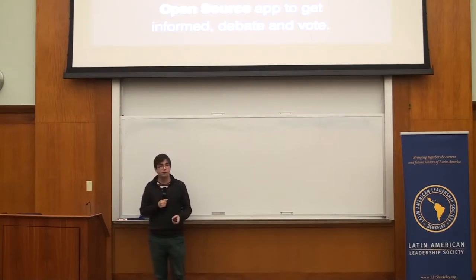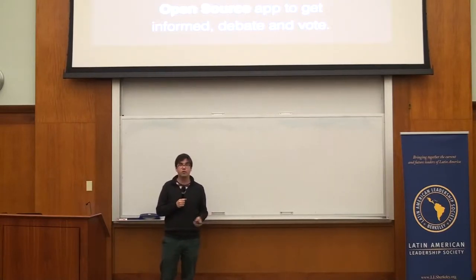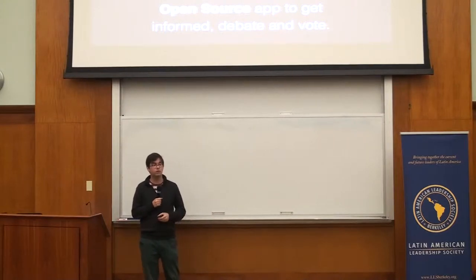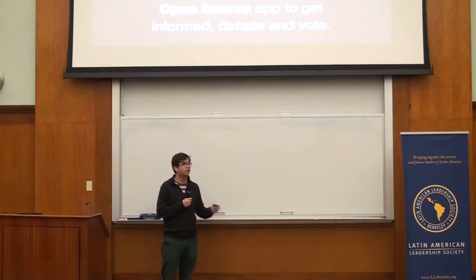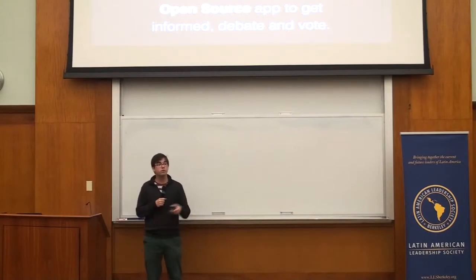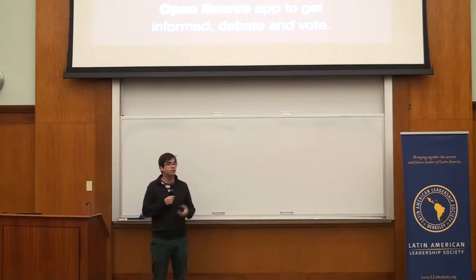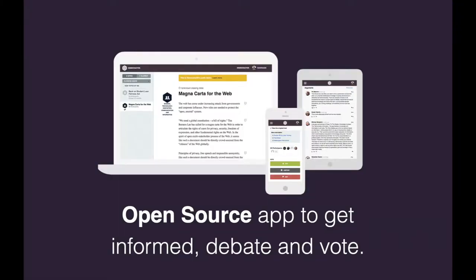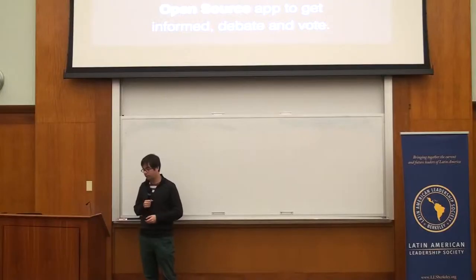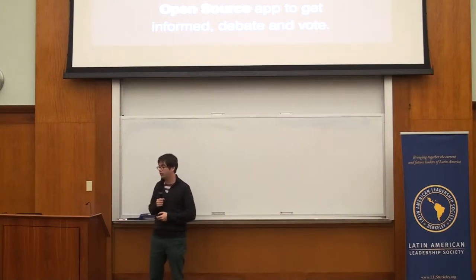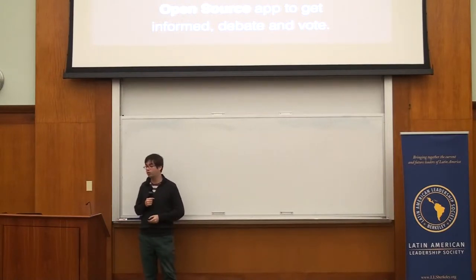Democracy OS today has over 1,000 watchers on GitHub. You can download the entire source code. It has been translated into 18 languages and has contributors from many places around the world. Every week there's a surprise — a new instance of Democracy OS appearing somewhere around the world. It's incredible what open source can do in terms of organic growth of technology.